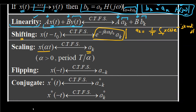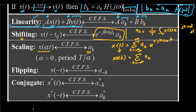In time scaling, x(at), the Fourier series coefficients ak are unchanged. Going back to the synthesis expression, x(t) = Σ ak e^(jkω₀t), if we scale time by substituting αt, the exponential changes but ak remains the same. However, the fundamental time period changes: when a > 0, the new time period is T/a.